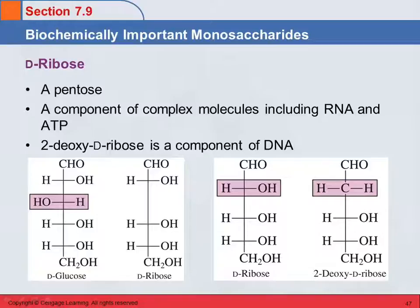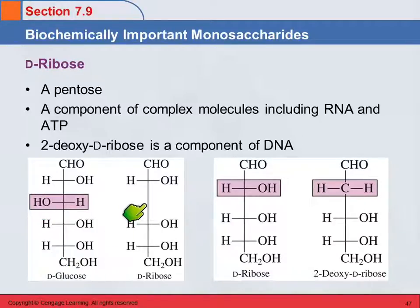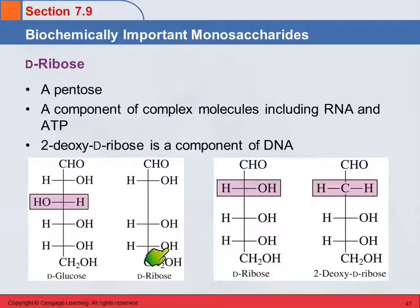Ribose is a pentose — five carbons. Comparing it to glucose, it's the same as glucose if you removed one carbon, giving the pattern right, right, right. Ribose is a component of many complex molecules like RNA and ATP, which are really important in biochemistry.